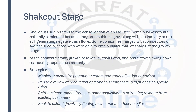The shakeout stage refers to the consolidation of an industry. Some businesses are naturally eliminated because they are unable to grow along with the industry and are still generating negative cash flows. Some companies merge with competitors or are acquired by those able to obtain bigger market shares. Growth of revenue, cash flows, and profits start slowing down as the industry approaches maturity. Strategies include monitoring the industry for potential mergers, identifying opportunities to acquire businesses, and periodically reviewing production and financial forecasts. Shift the business model from customer acquisition to extracting revenue from existing customers.